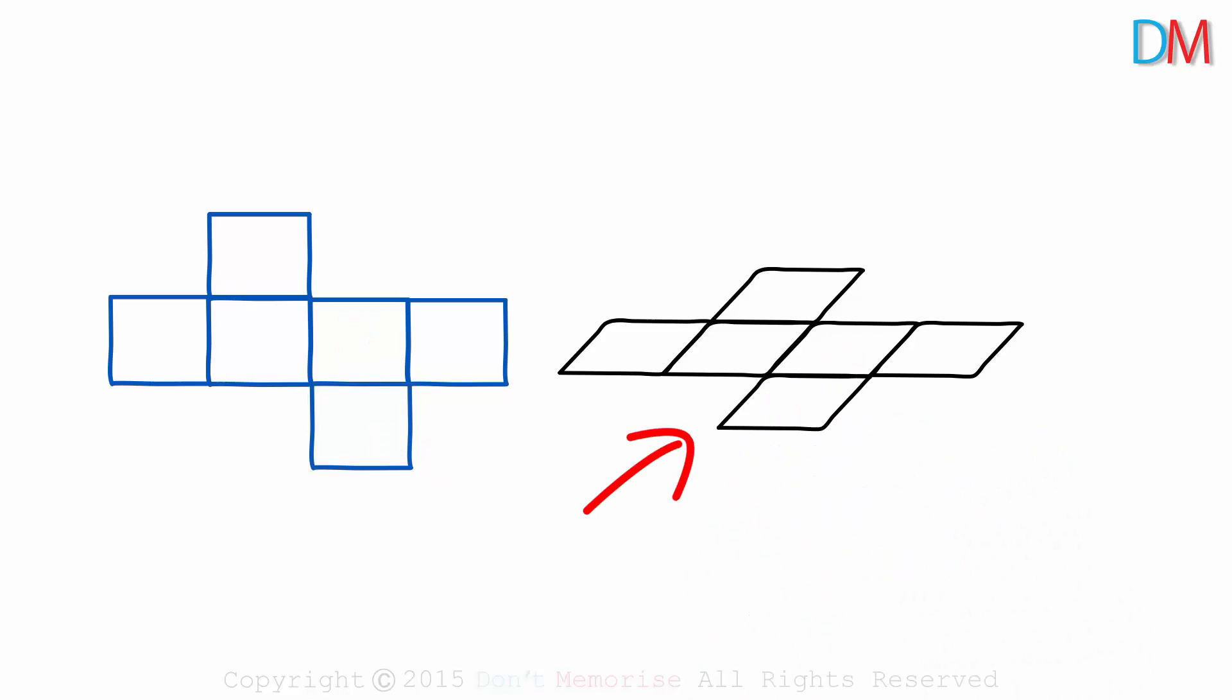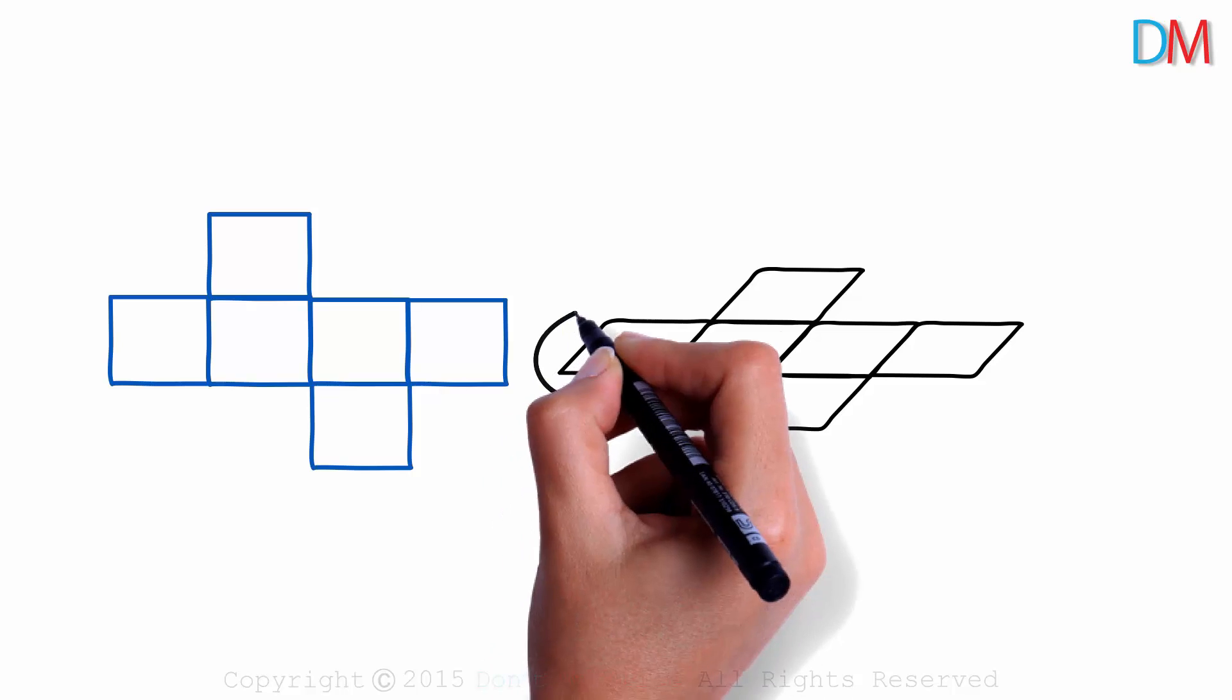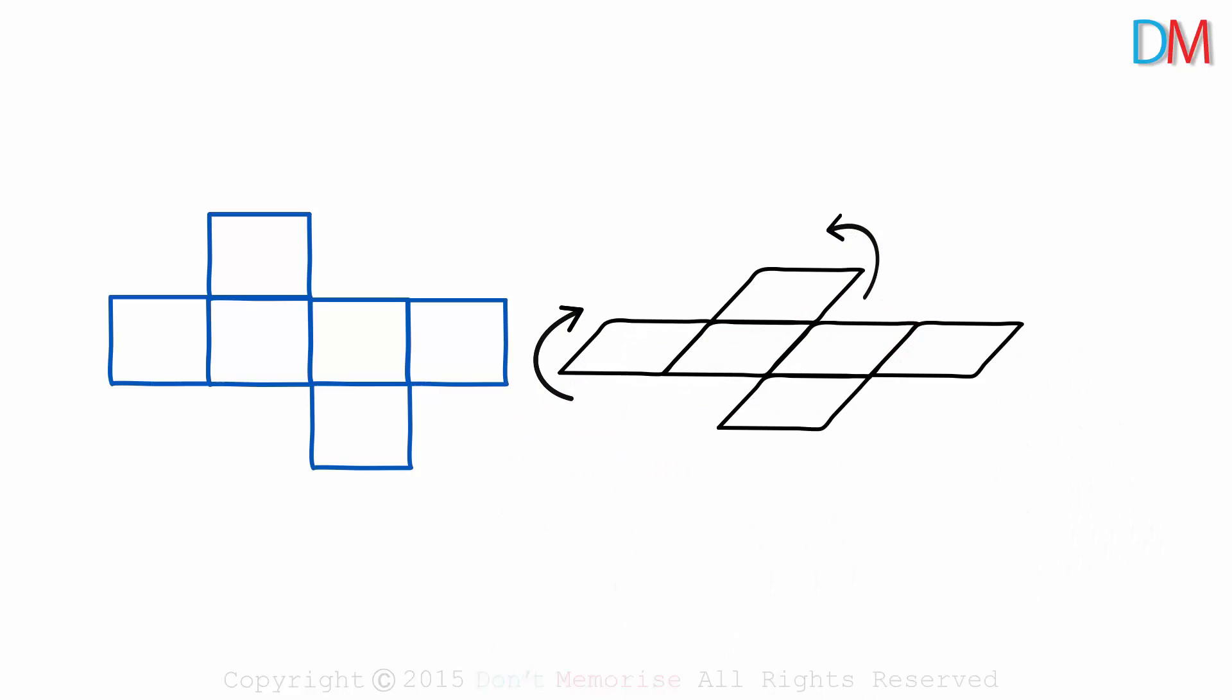Clearly it seems as if the net is lying on a plane and it gives us a much better idea about how the net can be folded to form a solid. How do we start modifying the net? To start off, we can fold these two faces inside and make them vertical. How will it look when that's done?